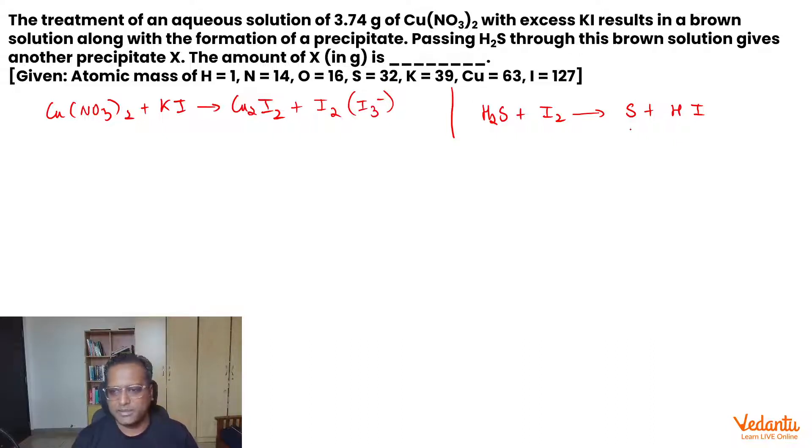Then the question says, find the amount of the sulfur precipitate. So we are given this mass, we need the sulfur mass, so we have to go either by mole concept or equivalent concept. Because a lot of redox reactions are taking place, I'd prefer to go via equivalent concept. Now, to start equivalent concept, we have to understand n-factor logics, isn't it?